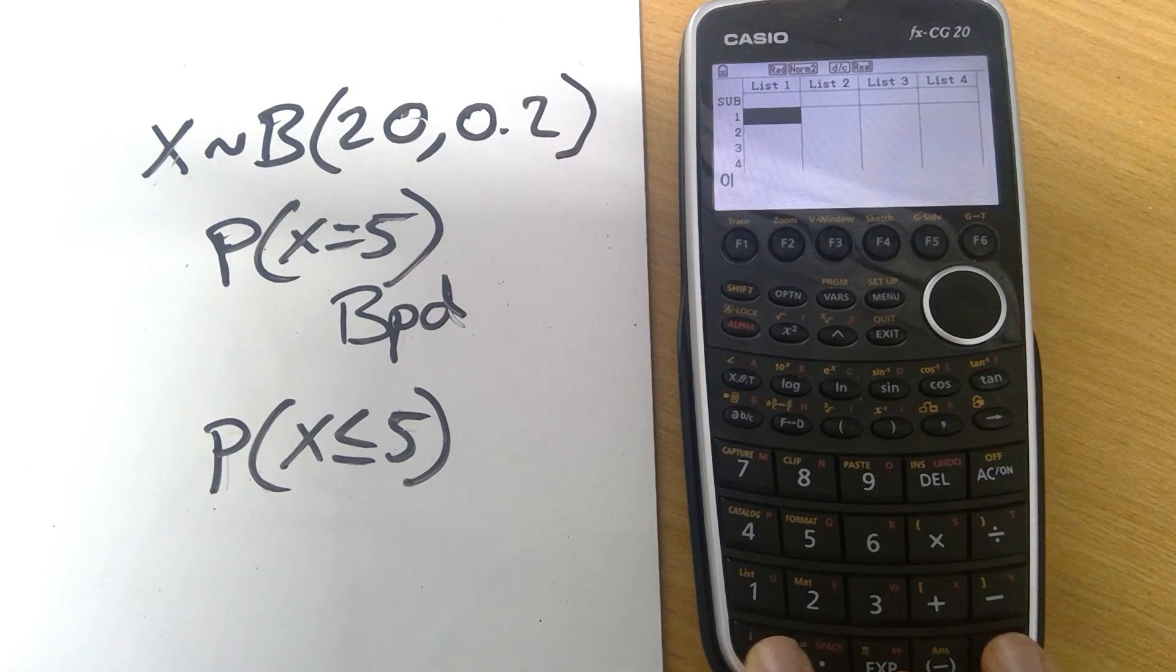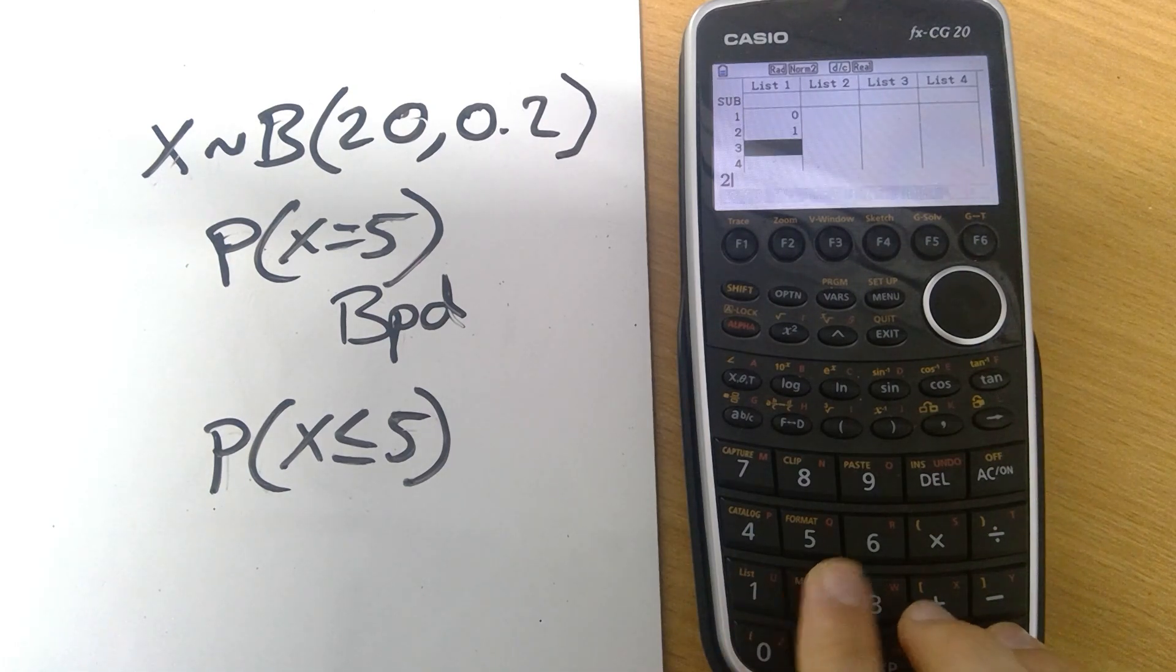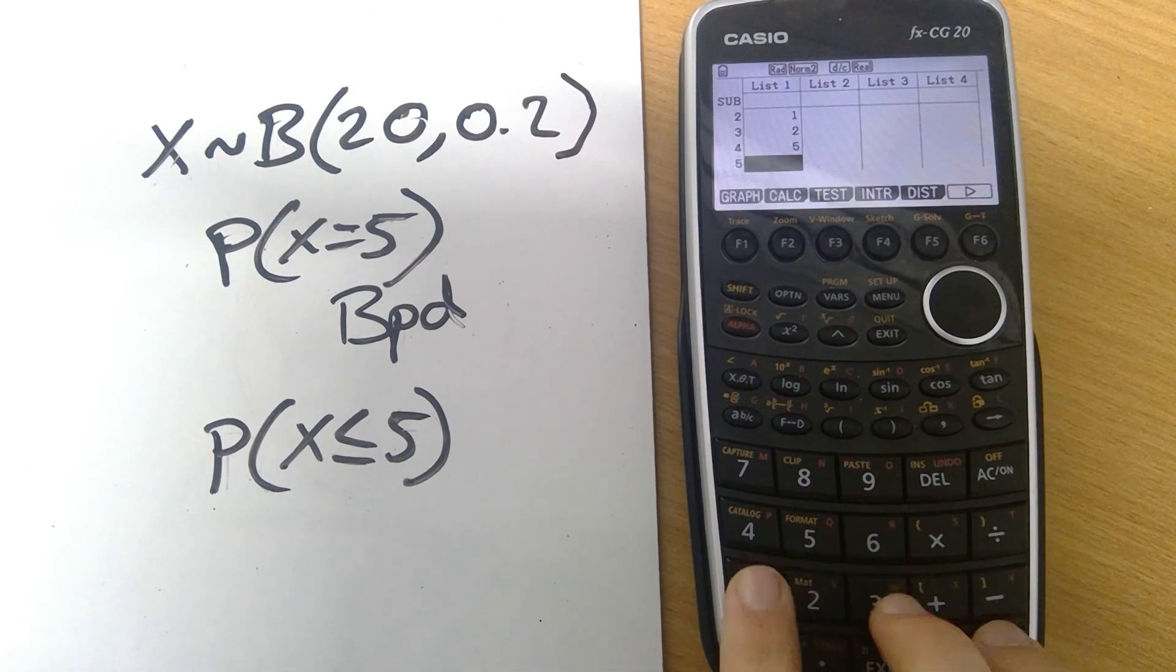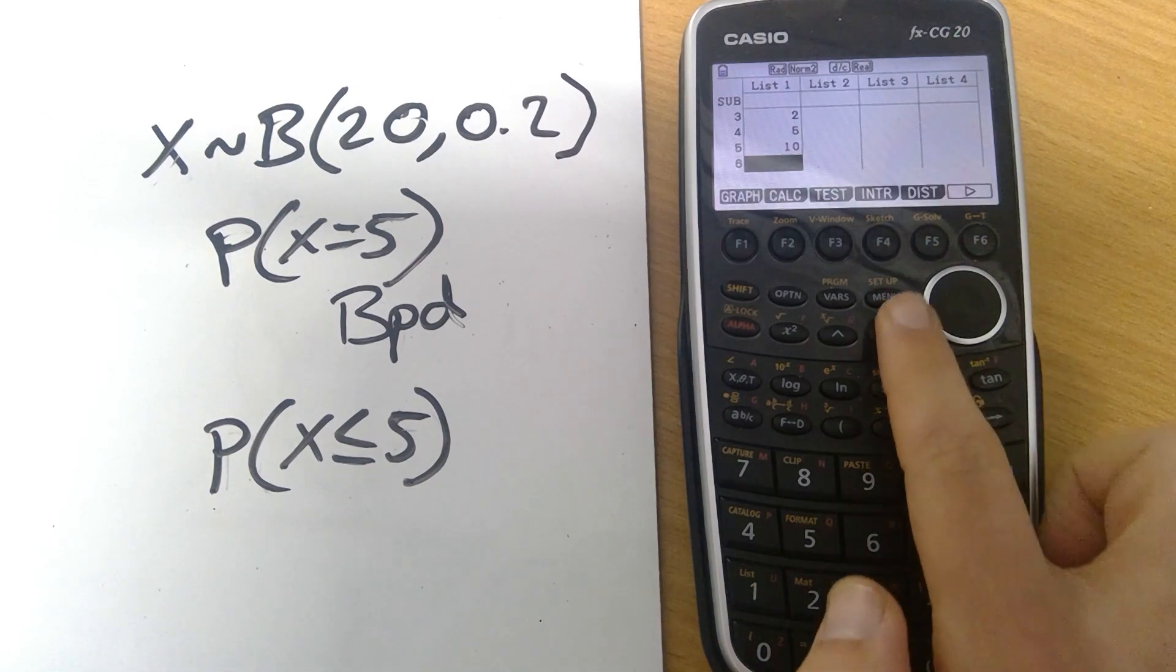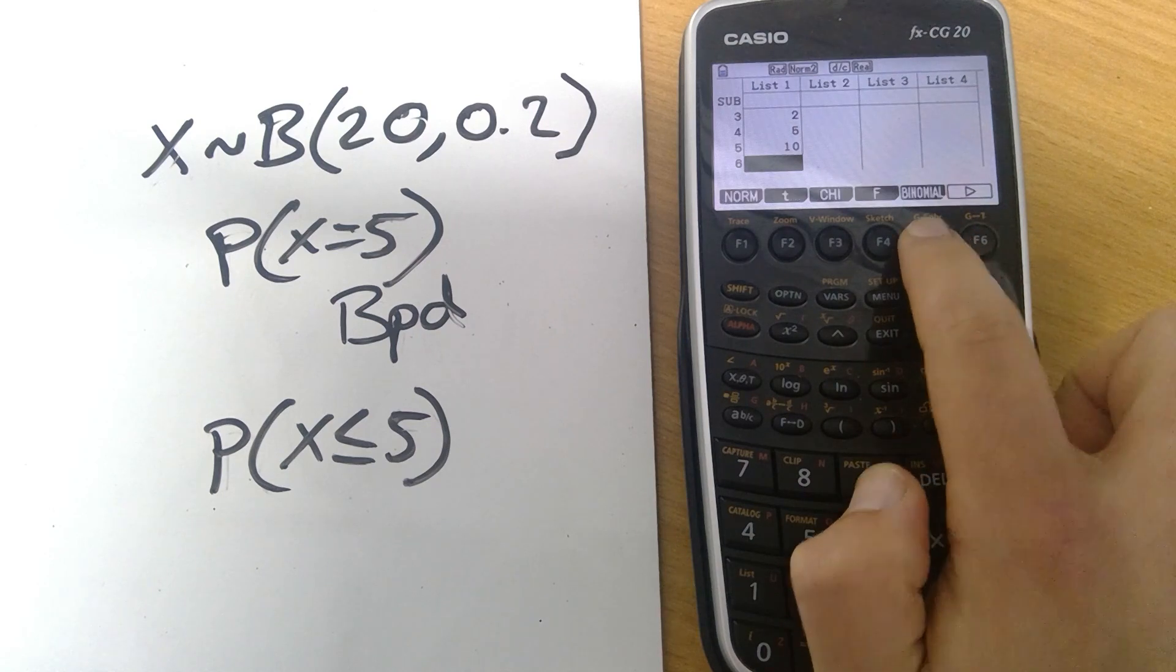So I'm going to want it to work out when X is 0, 1, 2, 5 and 10. And then we go back into the distribution mode back into binomial.